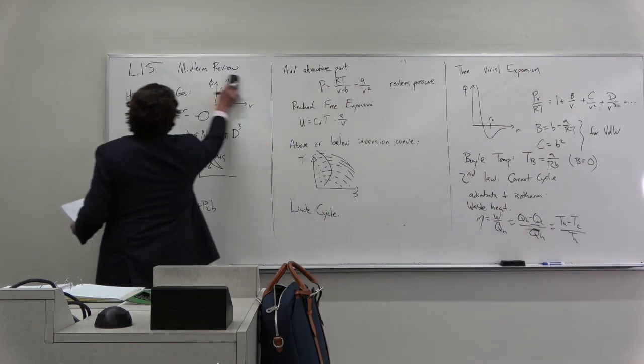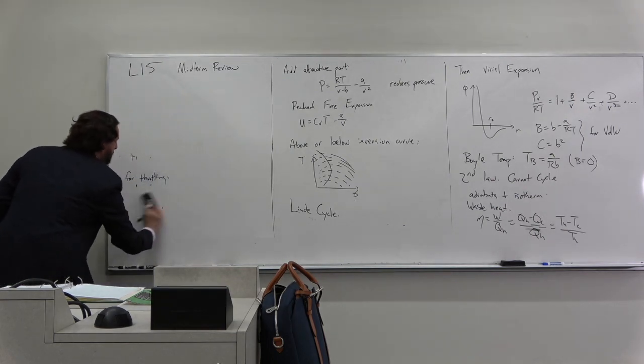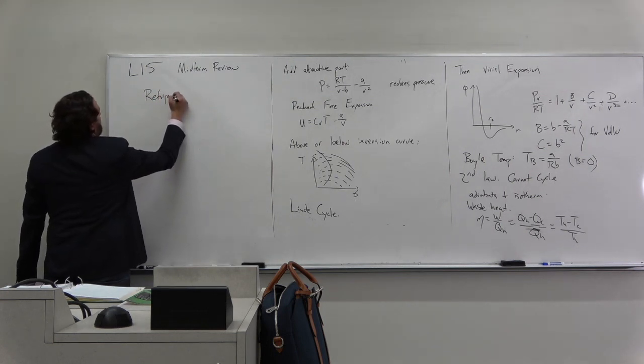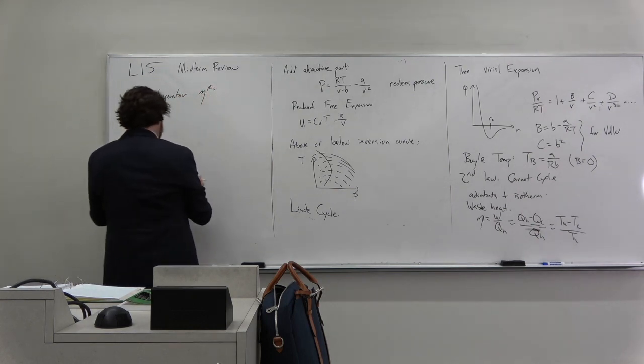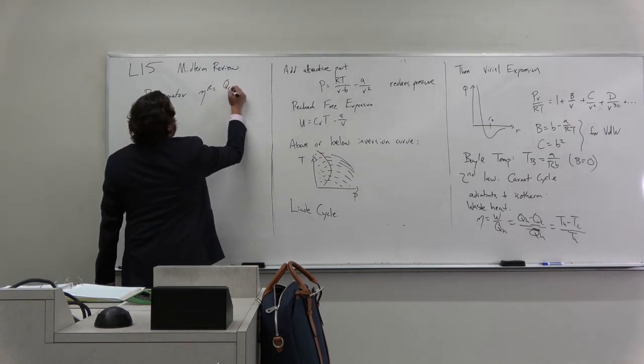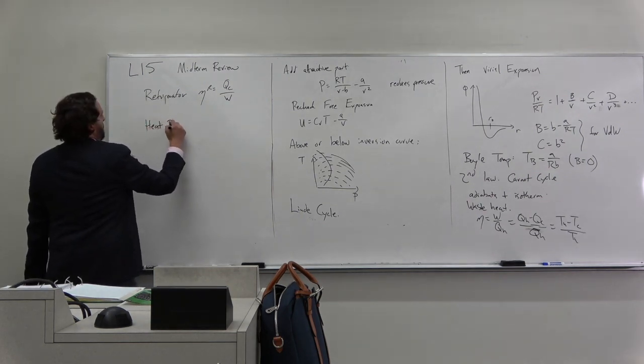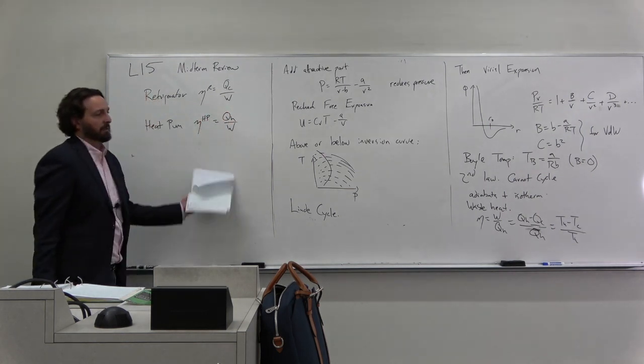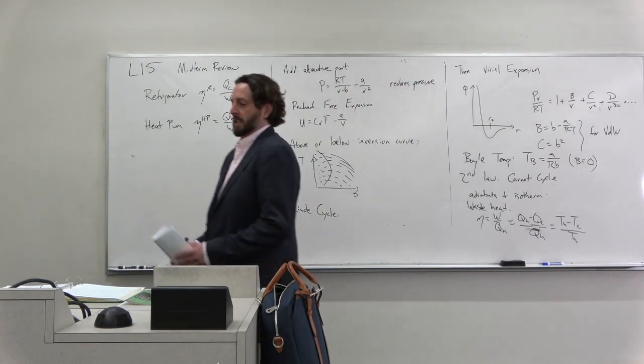The last thing we talked about was the efficiencies, and we talked about the same for our refrigerator. We talked about coefficient of performance: for a refrigerator it was what we wanted, which was QC over work, and for a heat pump we had QH over work. You can rewrite those in terms of QH over QC minus QC or TH over TC.